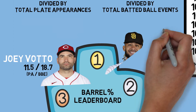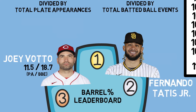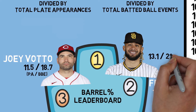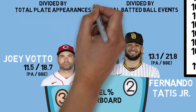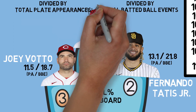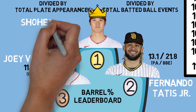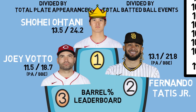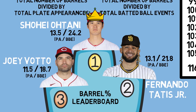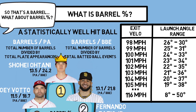In second, Fernando Tatis Jr. sits at 13.1% Barrels Per Plate Appearance and 21.8% Barrel Per Batted Ball Event. And topping the leaderboard is Shohei Ohtani with a whopping 13.5% Barrel Per Plate Appearance and 24.2% Barrel Per Batted Ball Event. The more frequently referenced metric is Barrels Per Plate Appearance, but these are the top three in the same order whether you use plate appearances or batted ball events.